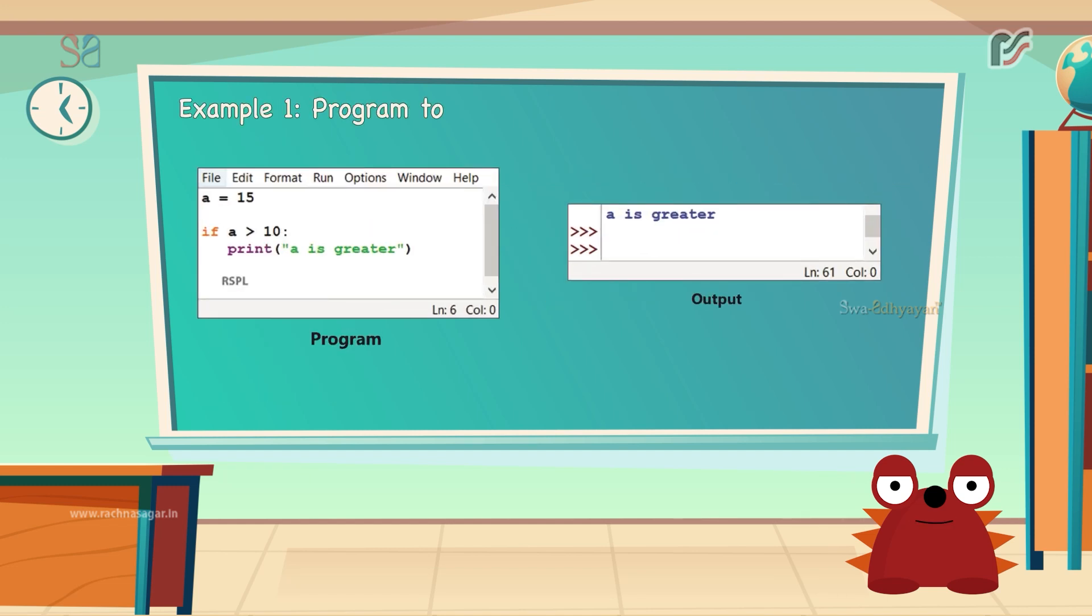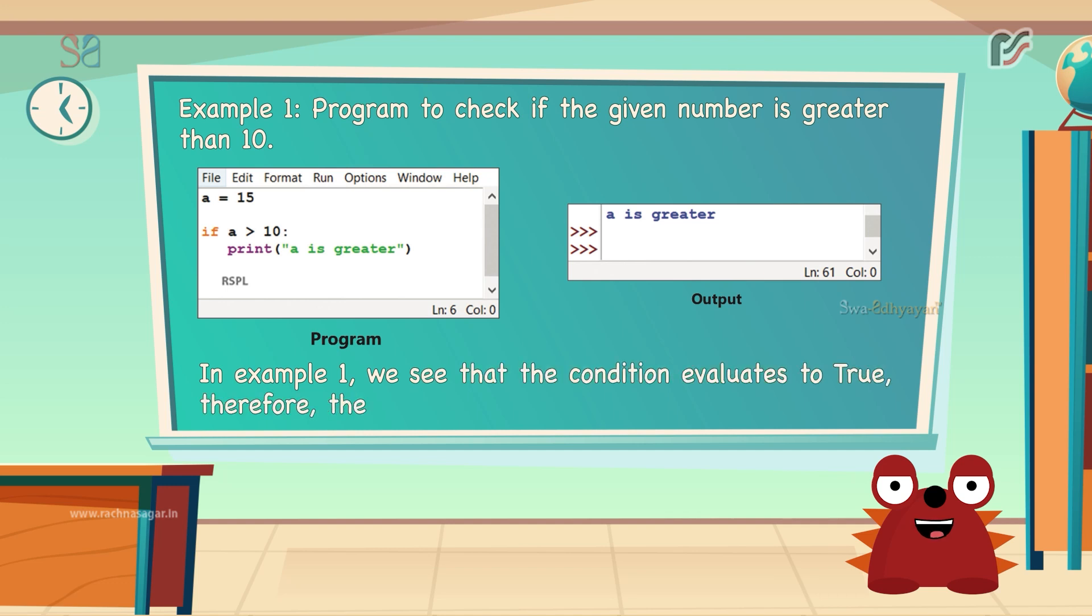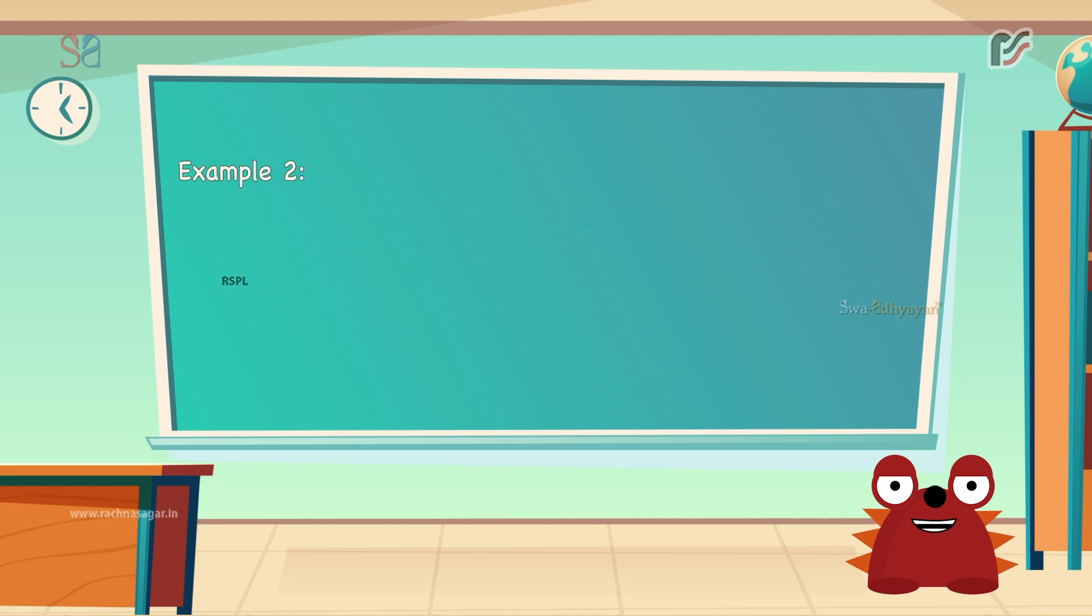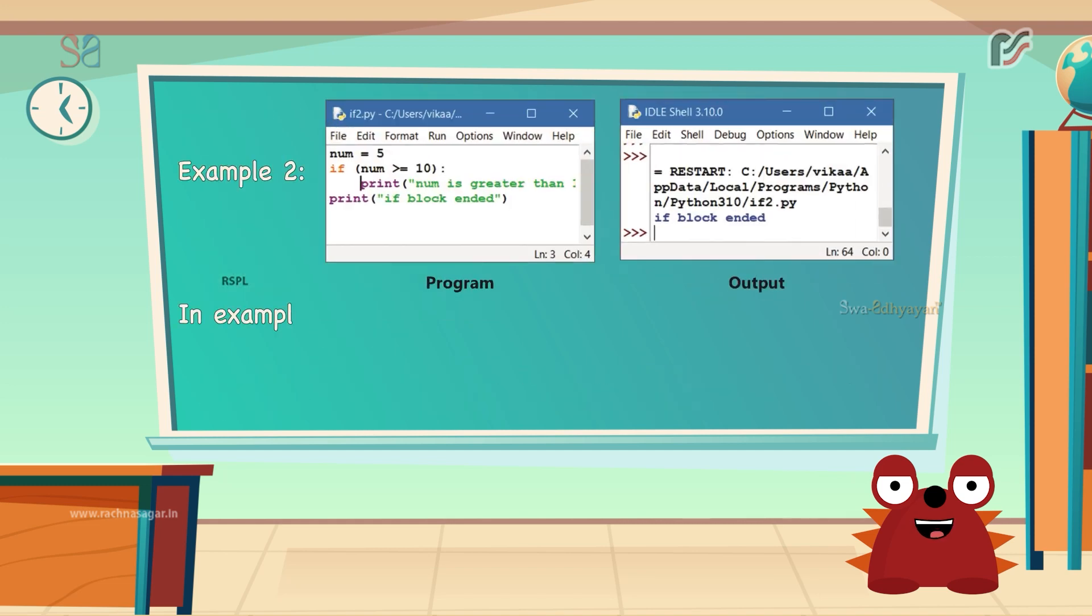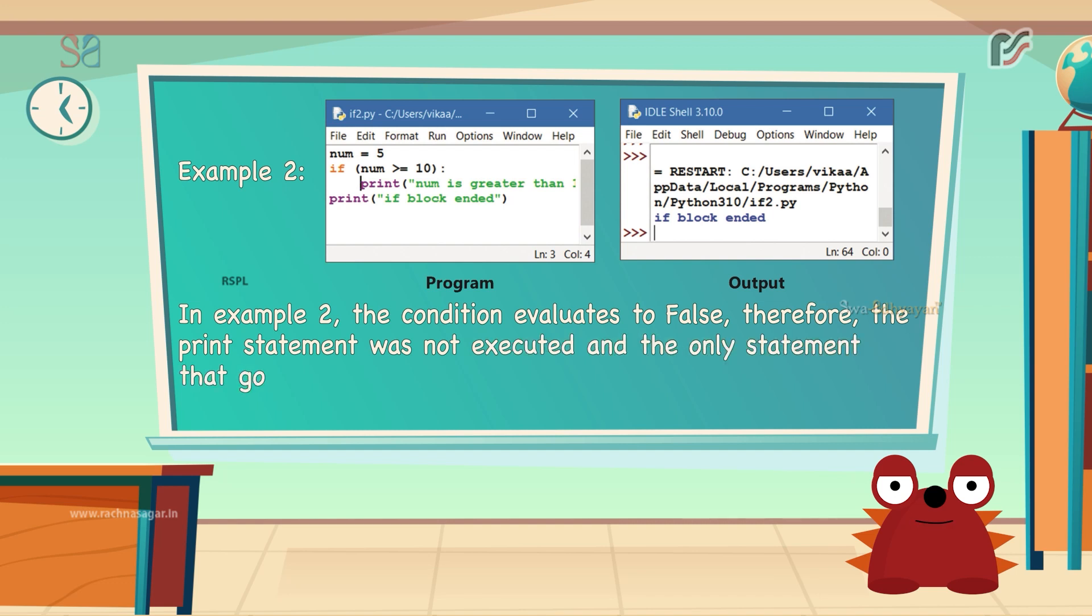Here is an example of a program to check if the given number is greater than 10. Here, we will see that the condition evaluates to true. Therefore, the print statement is executed. Let us look at another example. In this example, the condition evaluates to be false. Therefore, the print statement was not executed and the only statement that got executed was print if block ended because it was outside the if block.